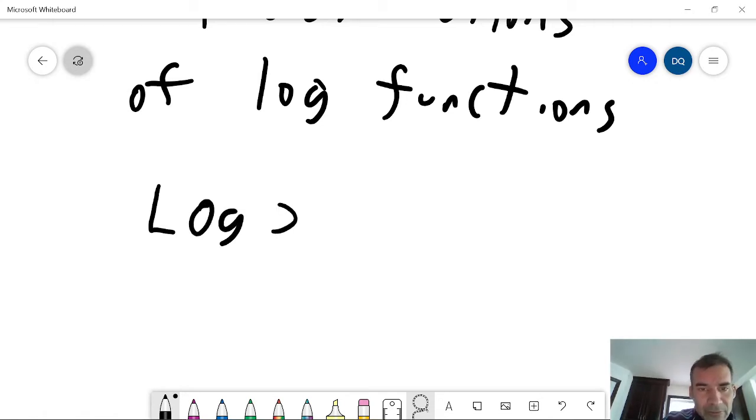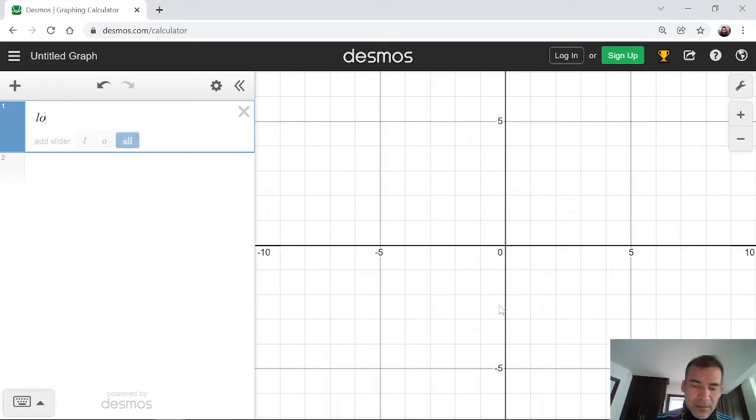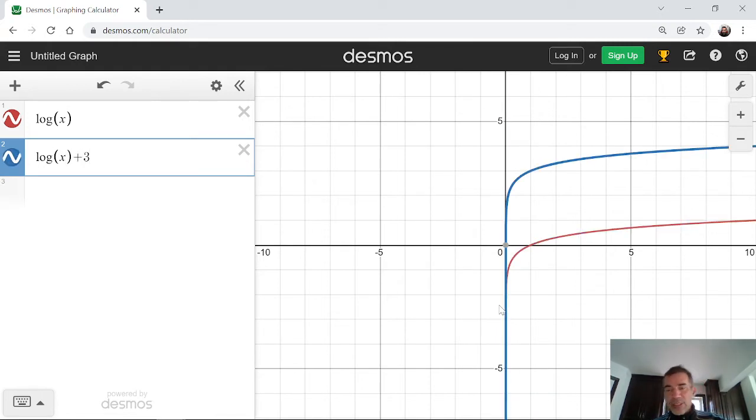If you have the graph of log x and you were to add 3 to it. So here's a graph of log x and right below it I'm going to take the function log x and add 3. And as you'd expect, you see it move up vertically by 3.